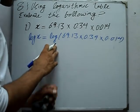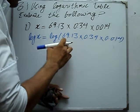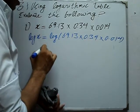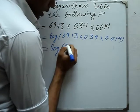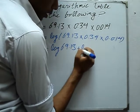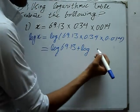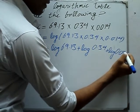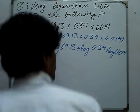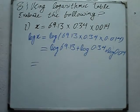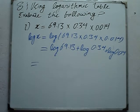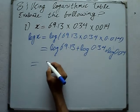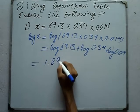Log of x is equal to log 69.13 plus log 0.034 plus log 0.014, by the log property, which will be obtained from the log table. Log 69.13 is equal to 1.8396.